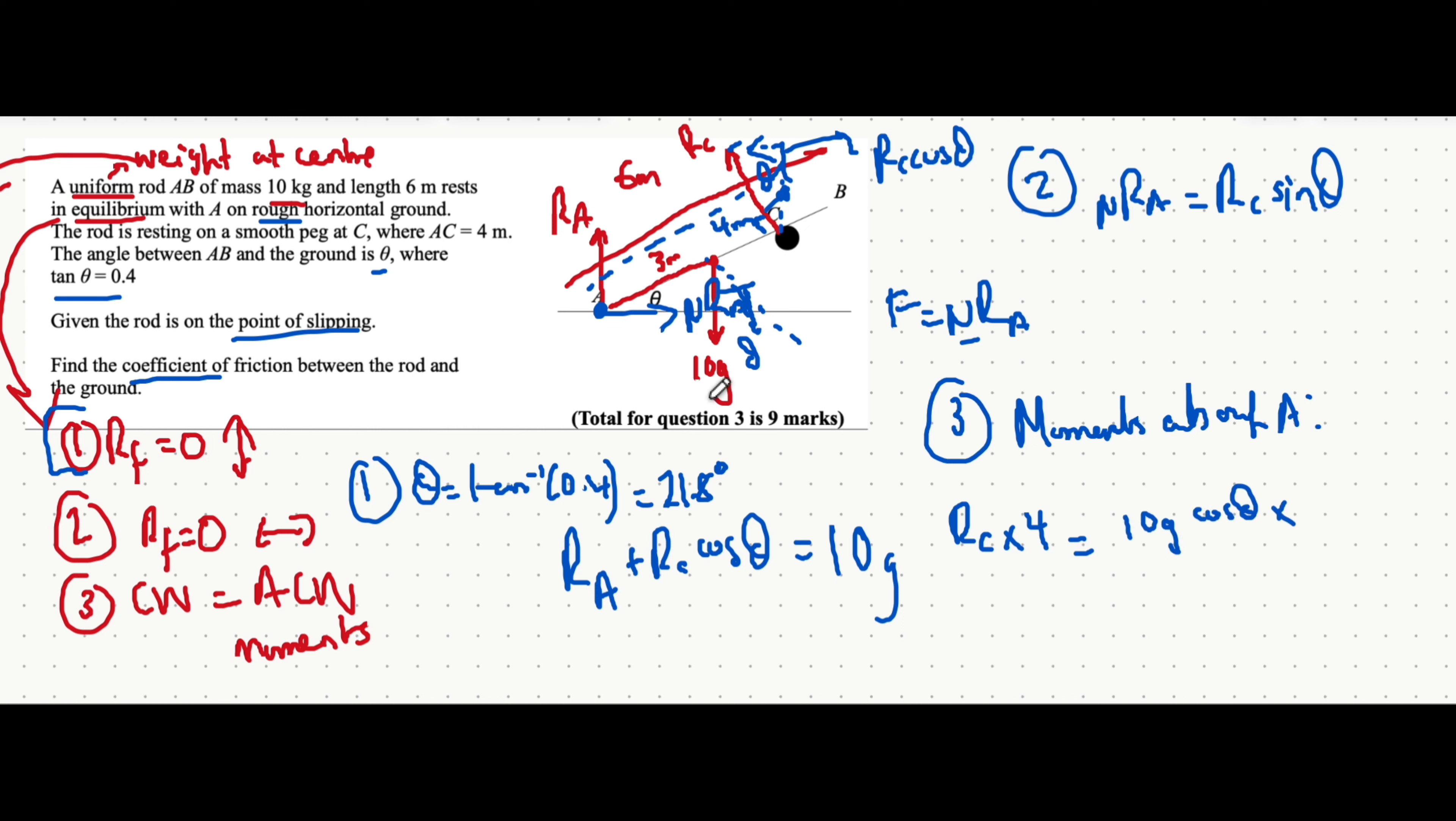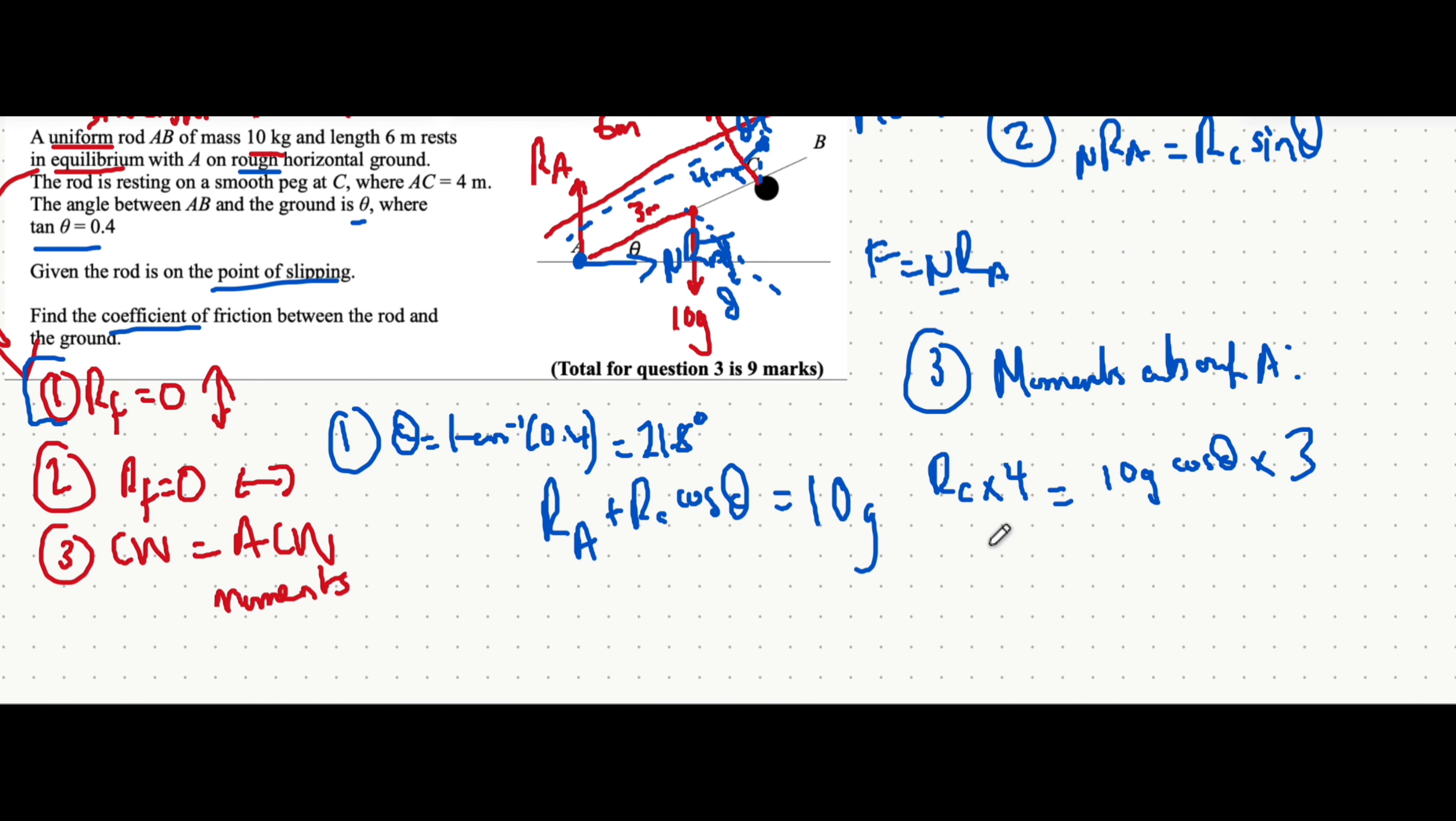So we can say it's equal to 10 G cos theta, all multiplied by the distance of where the weight acts from the pivot, and that's three.